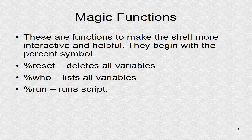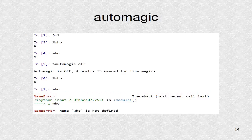Magic functions are used to make the shell more interactive and helpful. Magic functions start with the percentage symbol. Three magic functions are: to reset the shell, list all variables in memory, and run a script. Actually the percentage symbol is not needed in the default configuration — you can turn off this feature with the percent automagic off statement.